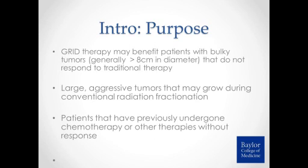GRID therapy is designed to benefit patients with bulky tumors, generally those greater than 8 centimeters who don't respond to traditional therapies. These are large, very aggressive tumors that may even be growing during conventional radiation fractionation. These are patients who may have previously undergone chemotherapy and failed — their tumor is actually growing. It could even be patients currently on conventional radiation therapy whose tumor is growing and won't benefit from traditional approaches. This therapy is not for all patients, but for a specific population with large, bulky, advanced tumors that won't respond well to traditional techniques.